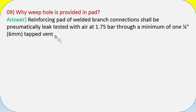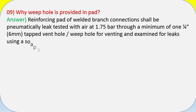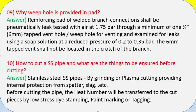Question 9: Why is a weep hole provided in a pad? Answer: The reinforcing pad of welded branch connections shall be pneumatically leak tested with air at 1.75 bar through a minimum 1/4 inch (6 mm) tapped vent hole/weep hole for venting, and examined for leaks using a soap solution at a reduced pressure of 0.2 to 0.35 bar. The 6 mm tapped vent shall not be located in the crotch of the branch.